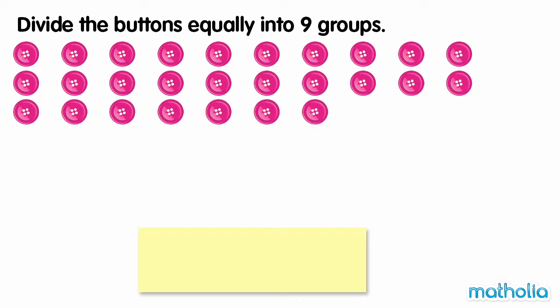Divide the buttons equally into 9 groups. There are 27 buttons. We need to divide the buttons equally into 9 groups.